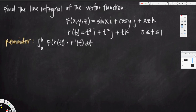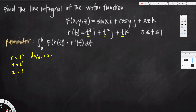Here we have the x, y, z values: x is equal to t³, y is equal to t², and z is equal to t. We need to find the derivative of r(t) to write r′(t). Taking the derivative of x with respect to t: dx/dt = 3t². The derivative of y with respect to t is 2t, and the derivative of z with respect to t is 1.